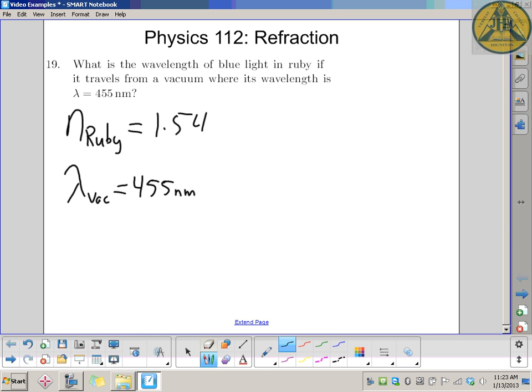There's an easy way and a hard way to do this question. The hard way: you figure out the frequency of the blue light inside the vacuum, and—this is the tricky part—remembering that the frequency is the same in the vacuum and in the ruby. Frequency of a wave source does not change when it goes from one material to another.